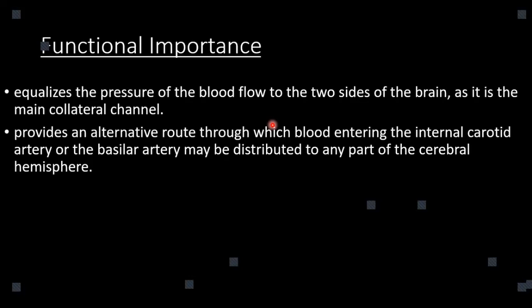What is the function and importance of the Circle of Willis? It equalizes the pressure of blood flow on both sides of the brain. It also provides an alternative route through which blood can enter via the internal carotid artery or the basilar artery, so that blood entering via the internal carotid system and the vertebrobasilar system can be distributed to any part, and one system can be compensated by the other. It provides a collateral channel — an alternative or collateral route.